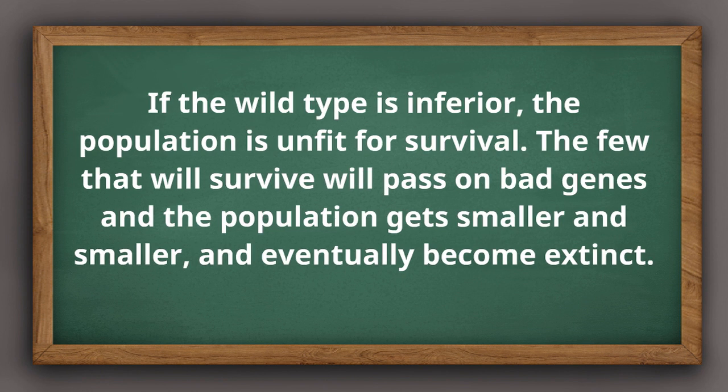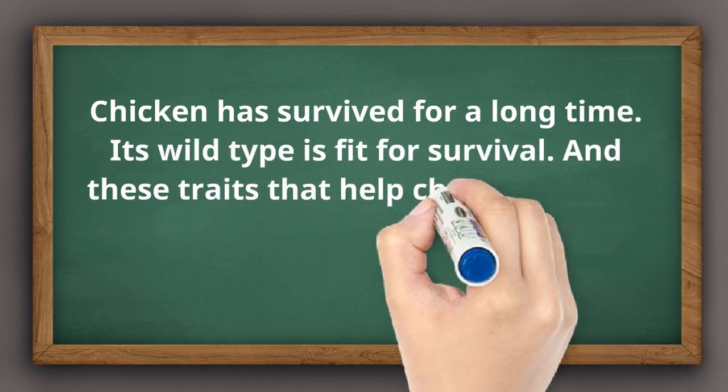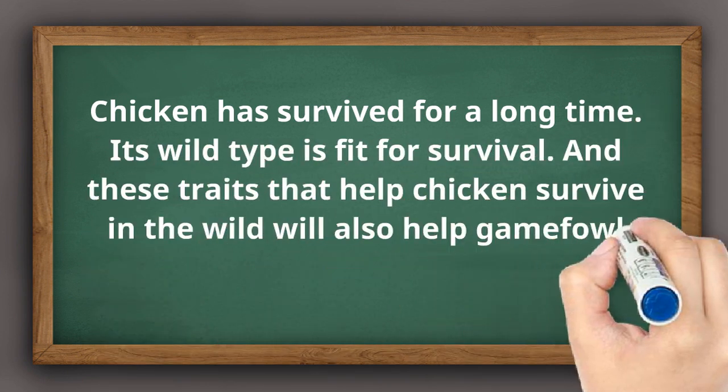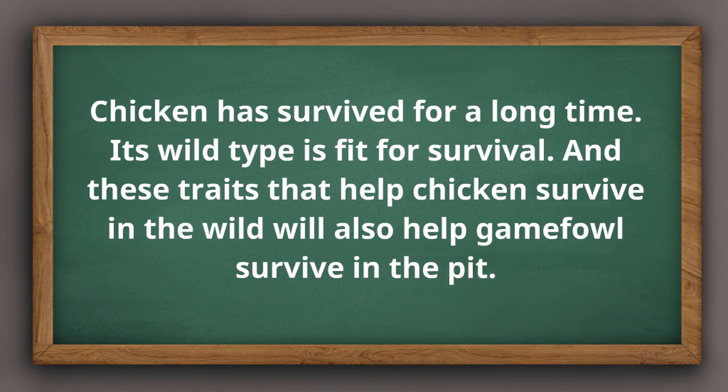Hence, fewer and fewer individuals will survive. Generation after generation, the population will eventually become extinct. Since chicken has not become extinct, then its wild type is fit for natural survival in the wild. And many of these traits that help chicken survive in the wild also help in survival in the pit.